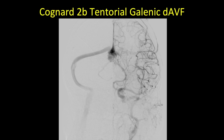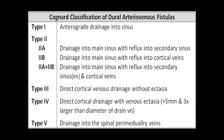This would be characterized as a Cognard Type 2b tentorial galenic dural arteriovenous fistula, where Type 2b involves drainage from the main sinus with reflux into cortical veins. In this case, reflux was into the cerebellar hemispheric vein, as pointed out in the prior angiographic image, indicating a slightly increased risk of bleeding.